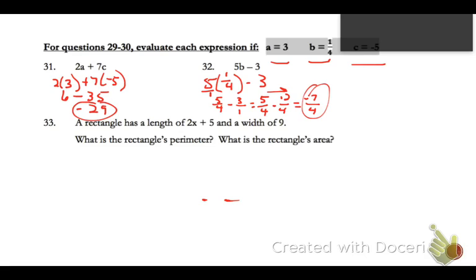On number 33, we've got a rectangle with a length of 2x plus 5. Let's switch colors. I'll write that on my rectangle, and then a width of 9. What is the rectangle's perimeter? And then what is the area?